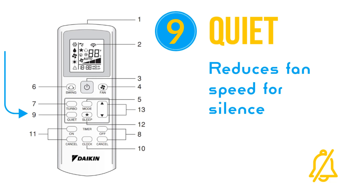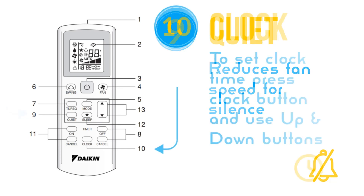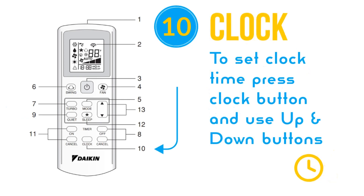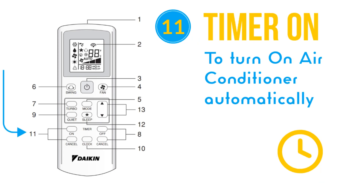To set the Daikin AC clock time, press and hold the clock button and use the up and down buttons when required. Use the timer on function to automatically turn on Daikin AC at a specific time. To activate timer on, press the on button. To set the on time, press the on button continuously to set the time. Press the cancel button to cancel the on timer. "ON" will display on the Daikin remote screen when the on timer is active.